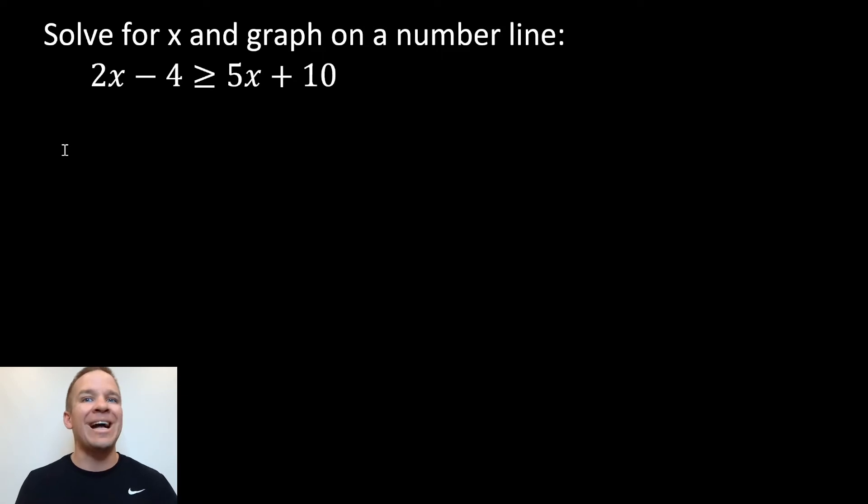Now we got x's on both sides, we got constants on both sides. What are constants? Those are numbers without a variable. So like 10 and 4 are both constants here, I guess negative 4. Alright, so solve for x and graph on a number line.